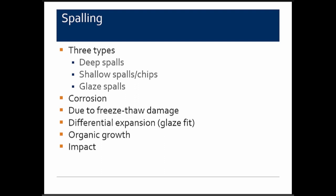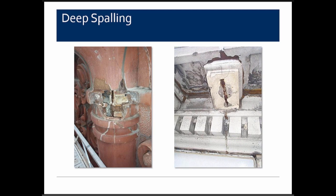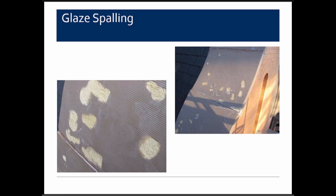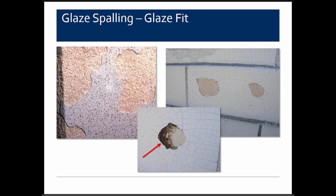There are three types of spalling: deep spalls, shallow or face spalls and chips, and glazed spalls. Deep spalls are due to corrosion and can also be from freeze-thaw damage. Glazing issues can be due to differential expansion between the glaze and body — known as glaze fit — organic growth can get behind the glaze and pop it off, and impacts can also cause damage. Glazed spalling can involve portions of the body spalling off with the glaze, or just the glaze alone.